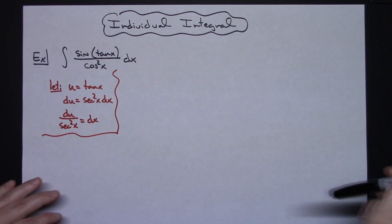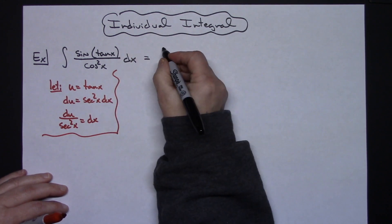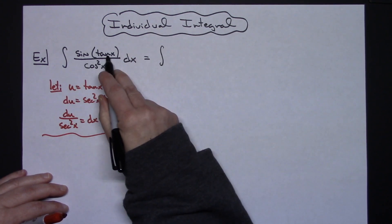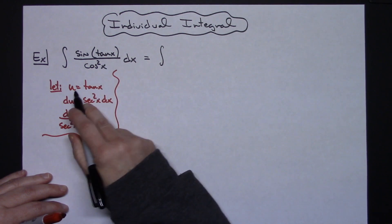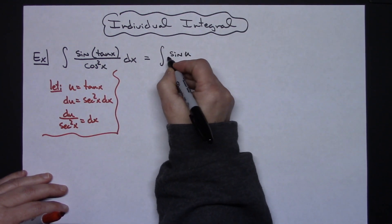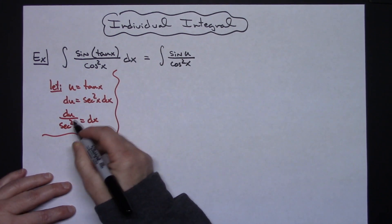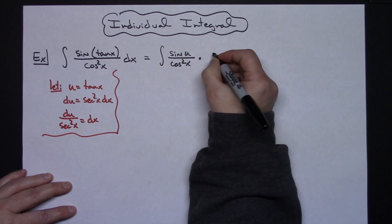So then I'm going to come back up here, work on this integral, and I'm going to do the substitutions. I'll have the integral of sine u, and then all over cosine squared x. Replacing that dx with what I said it was going to be equal, I'll have a du all over a secant squared x.